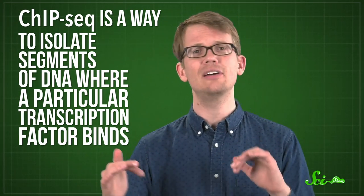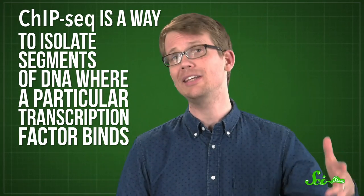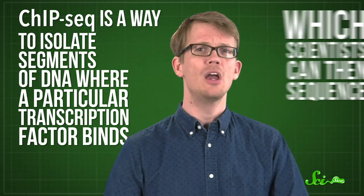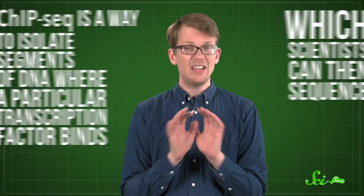ENCODE used a variety of molecular biology techniques to support this idea. Most of them had something to do with whether a transcription factor binds to a given piece of DNA. For example, CHIP-seq is a way to isolate segments of DNA where a particular transcription factor binds, which scientists can then sequence. The idea behind ENCODE is really cool. It was meant to help anyone who wanted to study specific stretches of DNA, like a database of what binds there and what non-coding RNAs are produced.